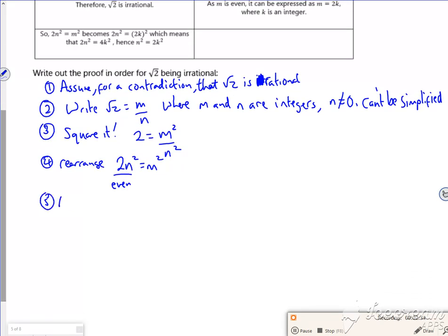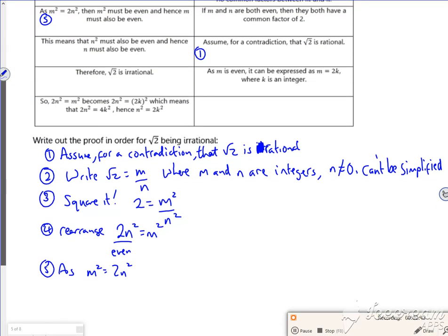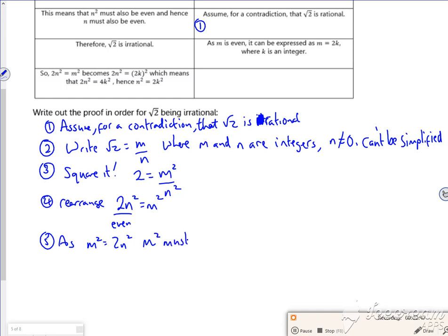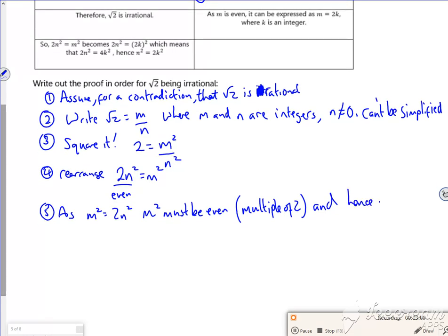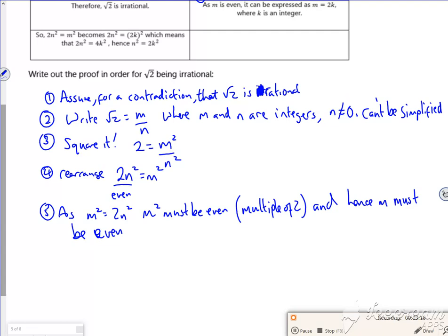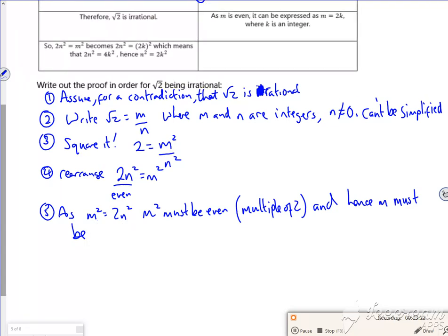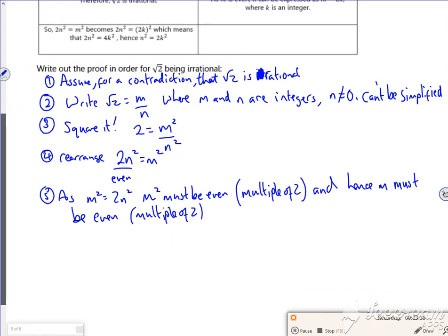So as m squared equals two n squared, m squared must be even. Whenever I'm writing even, really I'm saying a multiple of two. And that helps you with the root three one because I end up with a multiple of three. And hence m must also be even. If you think three times three is nine, it's odd. So if it's even, the original number, if you've got an even answer, it must have been the even start point. Once again, multiple of two for the hard ones. So that's that one done.